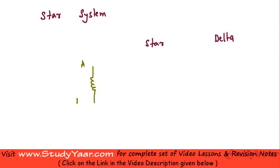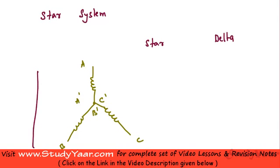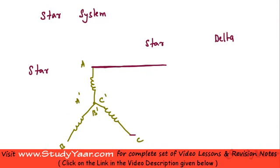Let's say this is my coil AA dash. This end is also connected to the other two coils — BB dash and CC dash. This type of connection is known as a star connection. Your power is delivered through transmission lines, so you just draw out wires from these ends and these become your transmission lines.